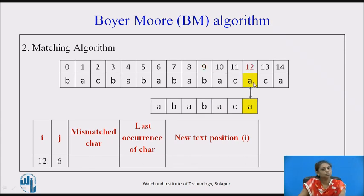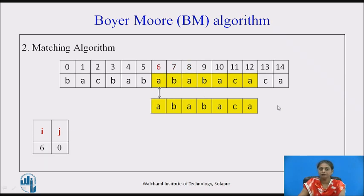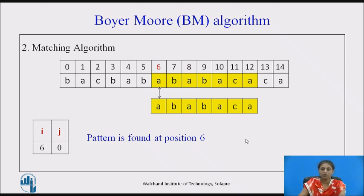With I at position 12 and J at position 6, the characters match. We decrement both — again matched, decrement again. Whenever there is a match we decrement both positions; if there is a mismatch we find the next position. All characters match and J reaches 0, meaning the pattern is found at position 6. That is the first occurrence. To find the next occurrences, we shift the window right by one position and repeat the BM algorithm process.